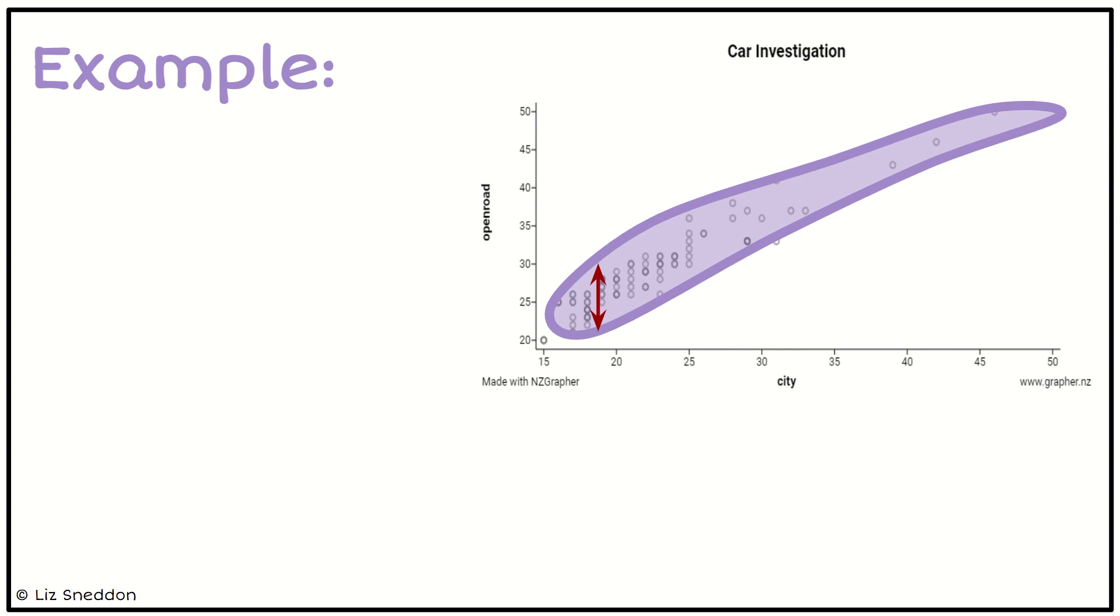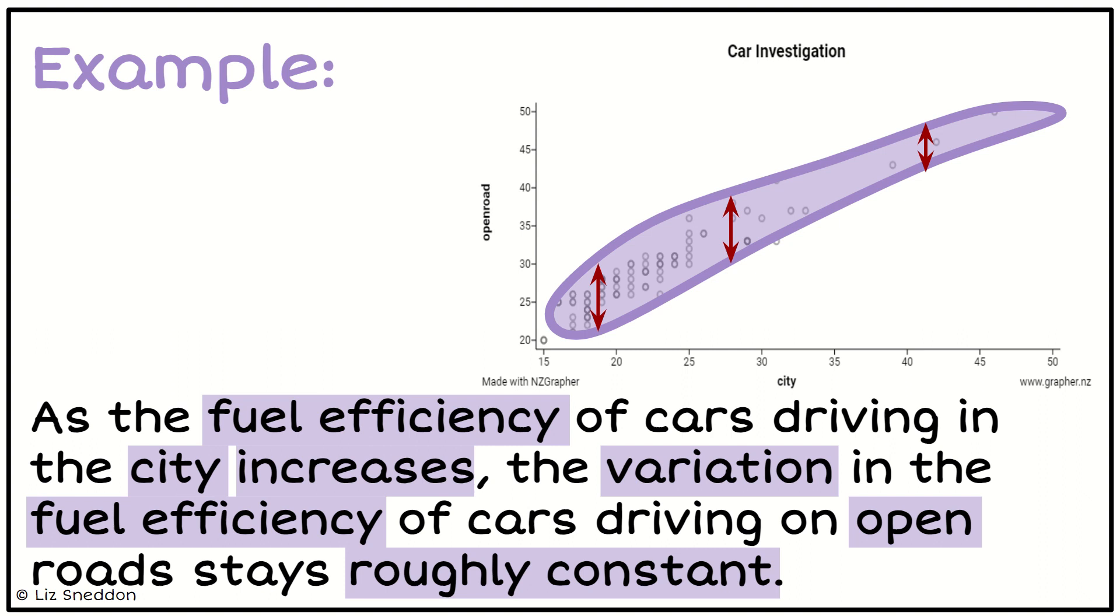We notice that the variation is quite similar. When we're looking for variation, think about double, triple, quadruple the size. We're looking for big changes in variation, not small changes. For this one I can talk about the fuel efficiency of cars when they drive in the city.